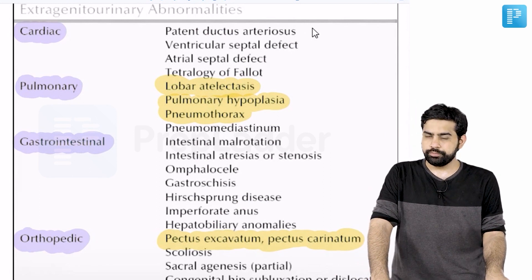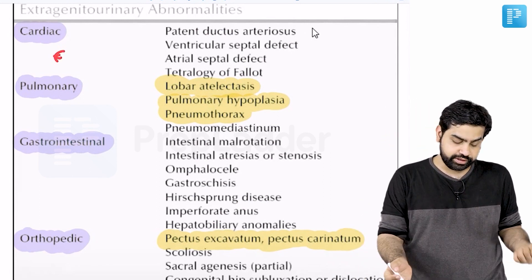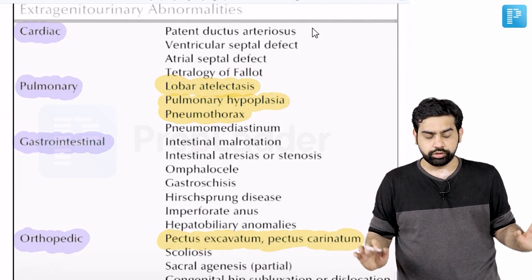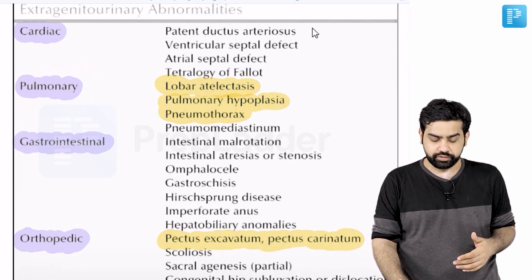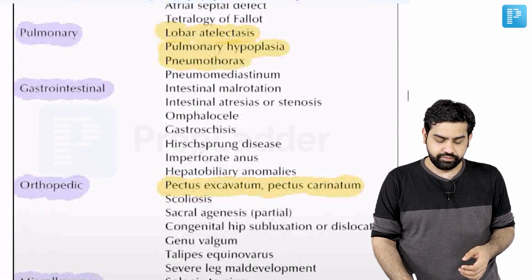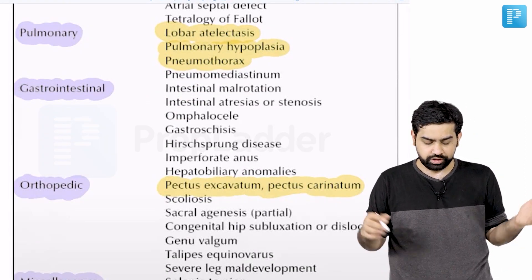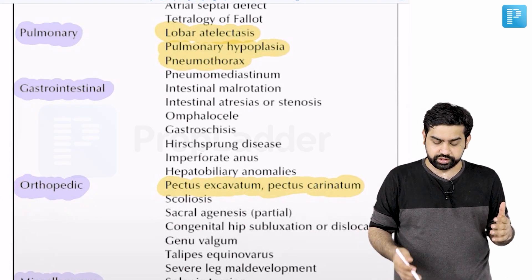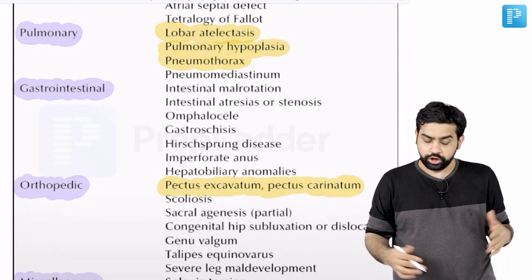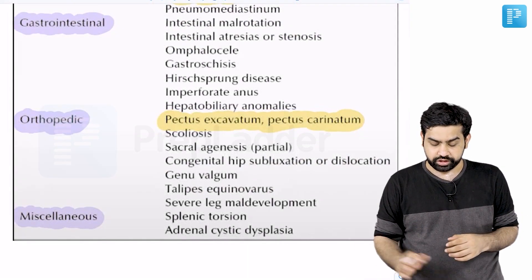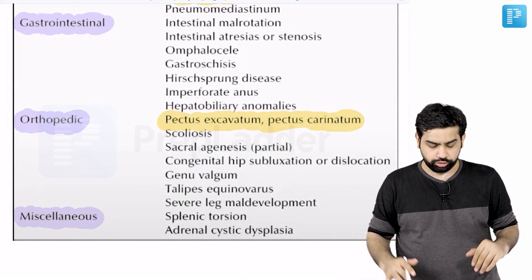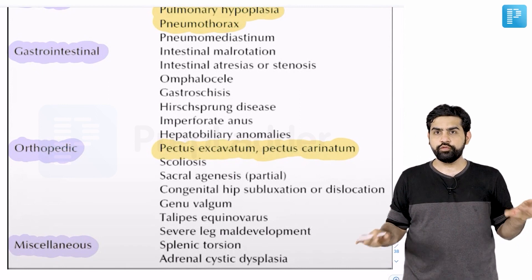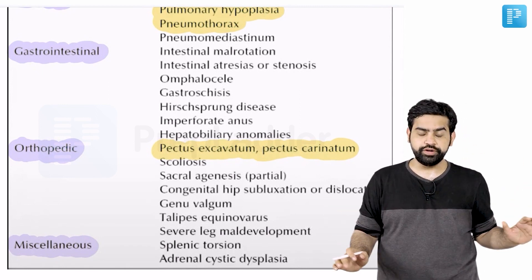Other associations of Prune Belly Syndrome include cardiac defects such as PDA, VSD, ASD, and Tetralogy of Fallot; pulmonary issues like atelectasis, pulmonary hypoplasia, pneumothorax, and pneumomediastinum; GI anomalies including intestinal malrotation, omphalocele, gastroschisis, and Hirschsprung disease; orthopedic issues such as pectus excavatum, pectus carinatum, scoliosis, sacral agenesis, and congenital hip subluxation; and miscellaneous findings like splenic torsion and adrenal cystic dysplasia.